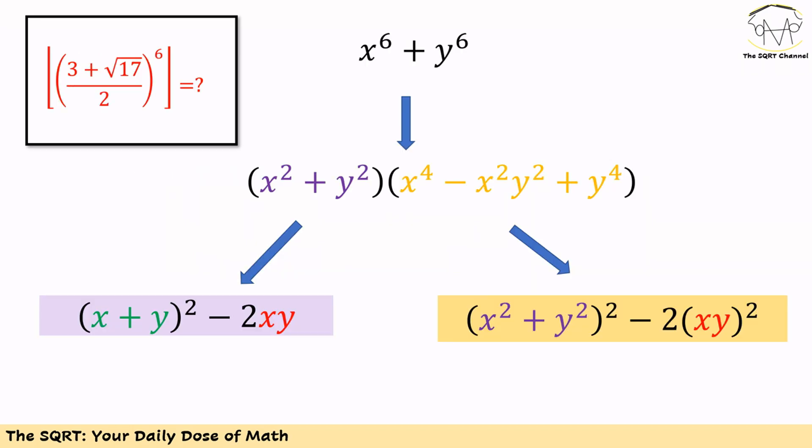Based on this new notation we need to find floor of x to the power of 6. Let's start by calculating x to the power of 6 plus y to the power of 6. We can use an identity to simplify this expression and write it based on two terms. The first term is going to be x squared plus y squared, and the second term is x to the power of 4 minus x squared y squared plus y to the power of 4.